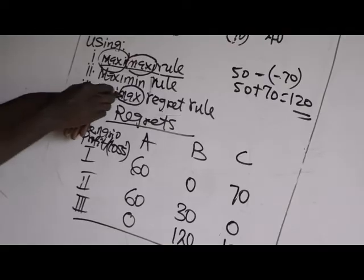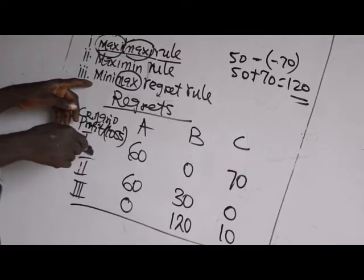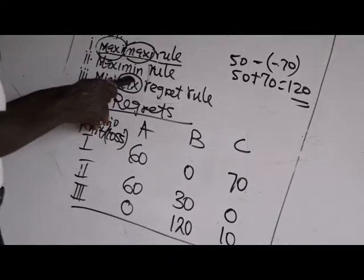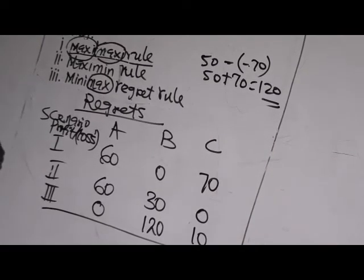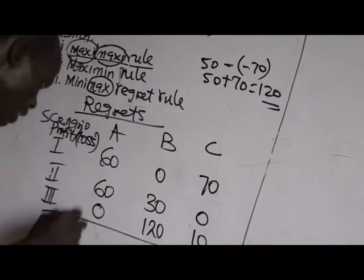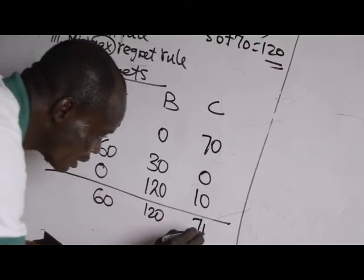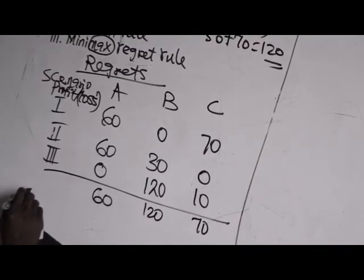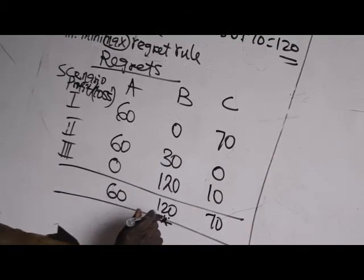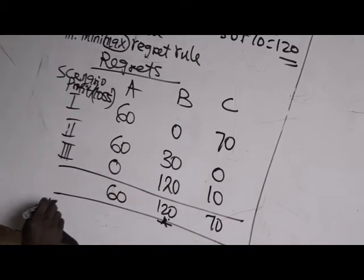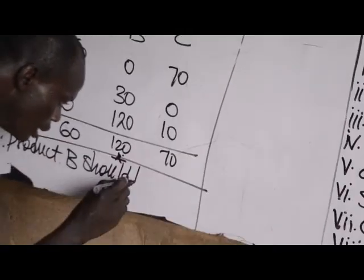Now applying the Minimax regret rule, we choose the maximum regret for each product. Product A's maximum regret is 60, product B's maximum regret is 120, and product C's is 70. Under Minimax regret, you choose the product with the minimum of these maximum regrets — which is 60. Therefore, product B should be chosen.